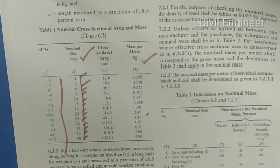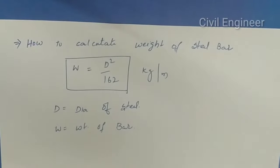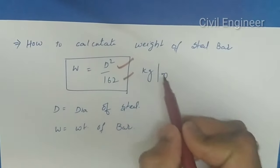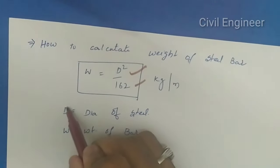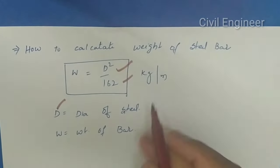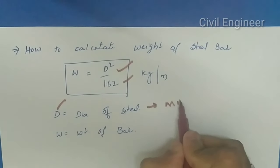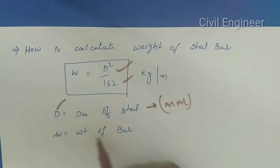I will explain the formula. The formula is D squared by 162. Here, D is the diameter of the steel in millimeters, and W is the weight of the bar in kilograms per meter.